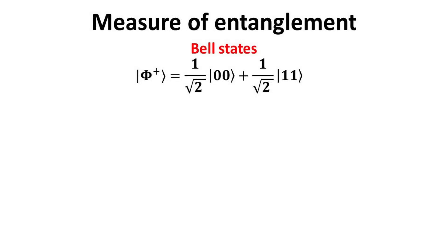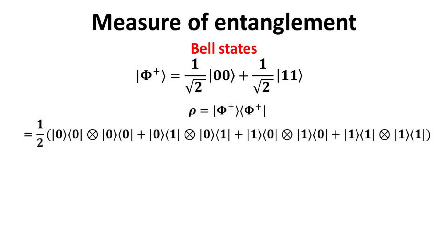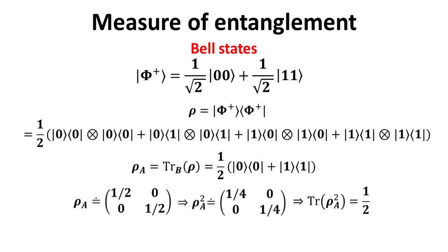We shall show that the reduced density matrix of an entangled Bell state is such a perfectly mixed state. Consider the example of the Bell state, which we have previously shown to be a non-separable state. Its composite density matrix rho can be computed from its outer product as given here explicitly. The reduced density matrix rho_A is obtained by tracing out Hilbert space B. Written in matrix form, we see that rho_A is a perfectly mixed state with only diagonal elements each equal to one-half. We then compute rho_A squared and show that the trace is exactly one-half — corresponding to the condition of a perfectly mixed state. Thus, Bell states are maximally entangled states whose reduced density matrix yields a perfectly mixed state.